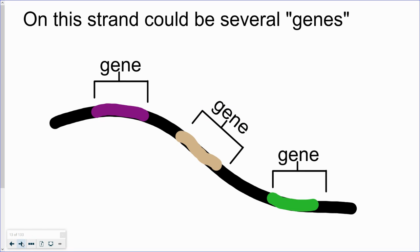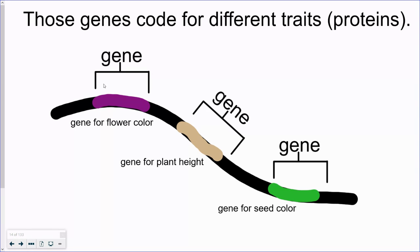So those genes code for different characteristics, different traits. They basically make different proteins. So again, if we're looking at our pea plant DNA here, this might be the gene for flower color, this could maybe be the gene for height, and maybe this is the gene for seed color.